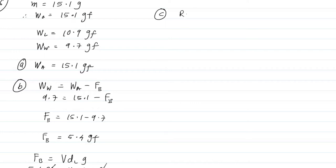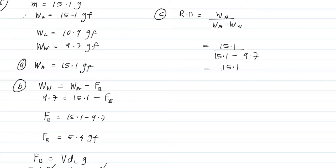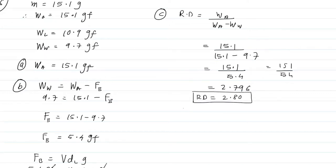Now, relative density of the stone equals weight in air divided by weight in air minus weight in water. Weight in air is 15.1, and weight in air minus weight in water is 15.1 minus 9.7, which is 5.4. So relative density is 15.1 divided by 5.4, which gives approximately 2.80.